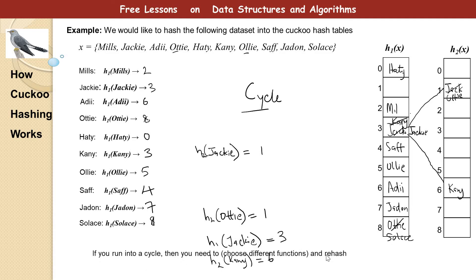If you run into a cycle, then you need to choose different hash functions and rehash. So you choose new hash functions and rehash after choosing h1 and h2. So these are the basics of Cuckoo Hashing.